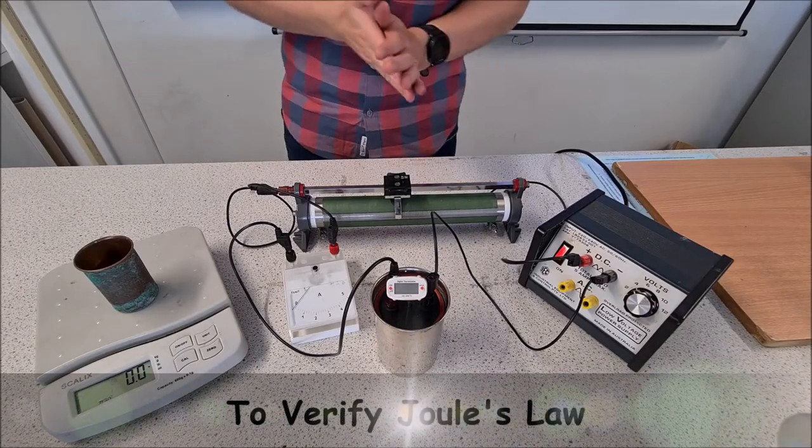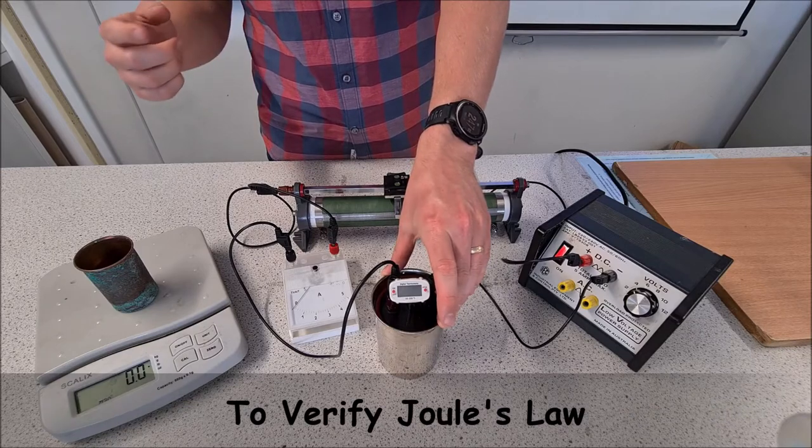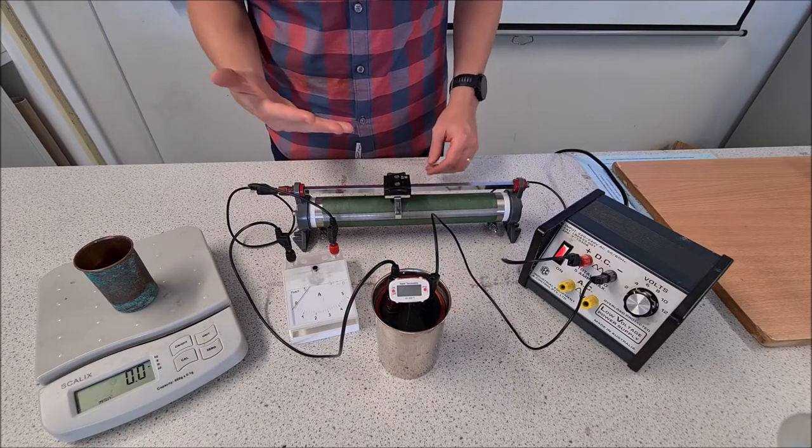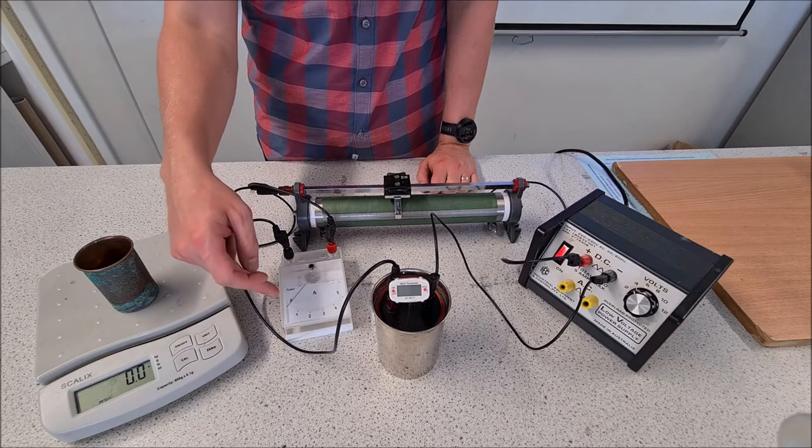To verify Joule's Law, we're going to heat up some water in the calorimeter. We're going to heat up the water for five minutes at a certain current, starting off with 0.5 amps for five minutes.